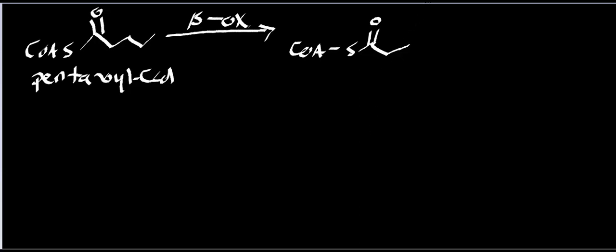Propionyl-CoA cannot undergo beta-oxidation. Beta-oxidation specifically produces acetyl-CoA, so if I were to do beta-oxidation there, I'd be left with just one carbon. This is why you have to have an even number of carbons — because you're ultimately producing acetyl-CoA, which is two carbons. Propionyl-CoA has a different pathway, and it's going to ultimately end up at succinyl-CoA, which will go into the TCA cycle.